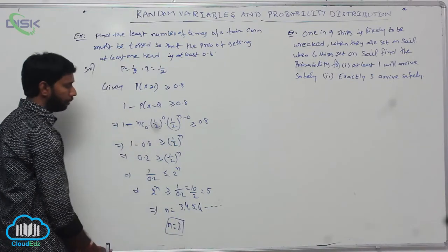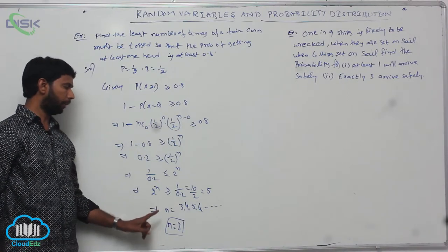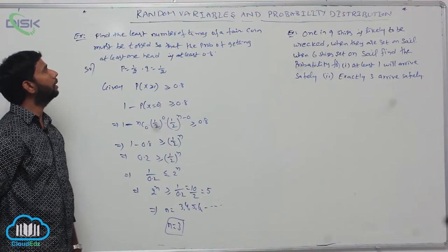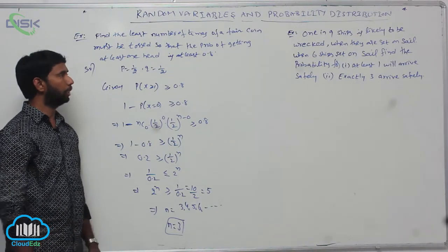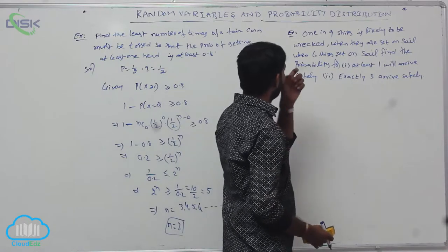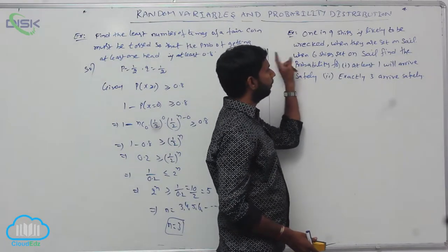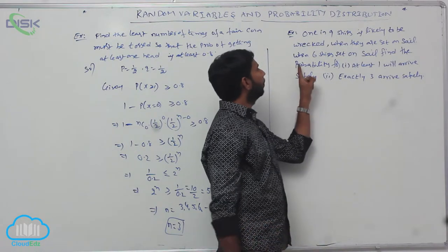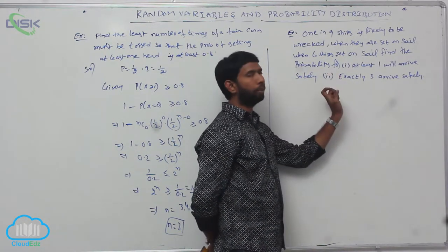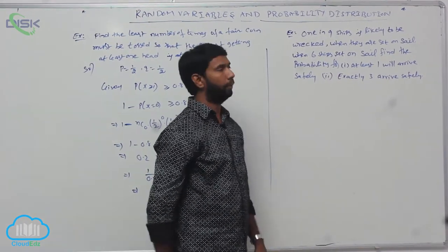If 2^N is greater than or equal to 5, N equals 3, 4, 5, 6 and so on. The required value is the least number, that is N equal to 3. Next: 1 in 9 ships is likely to be wrecked when they are set on a sail. When 6 ships are set on sail, find the probability that at least 1 will arrive safely and exactly 3 will arrive safely.